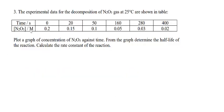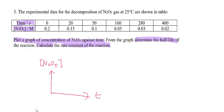For question number 3, we again have experimental data: time and concentration. The question specifically asks you to plot a graph of concentration of N₂O₅ against time. From the graph, determine the half-life for the reaction, and then calculate the rate constant. Before determining the half-life, always determine the order of reaction first.